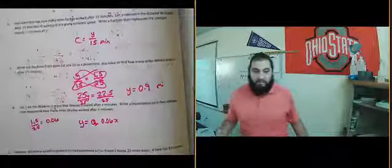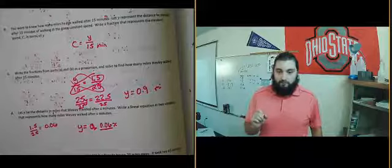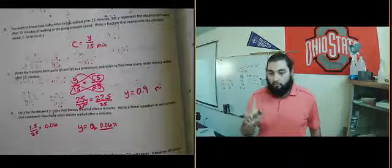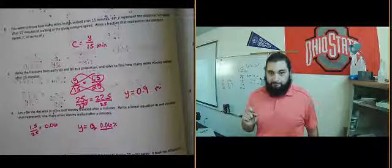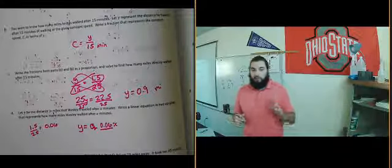or 6 hundredths, or you can write that as 3 fiftieths. Either way, this is going to be our constant of proportionality. This is our distance after 1 minute. So he walks 0.06 miles after 1 minute.